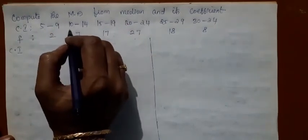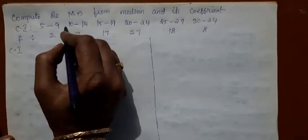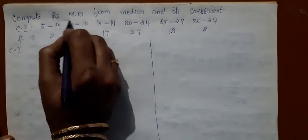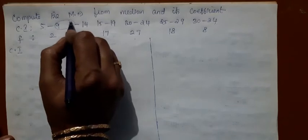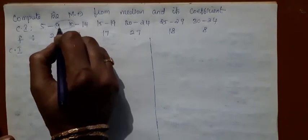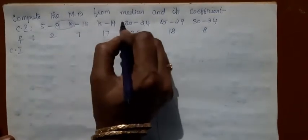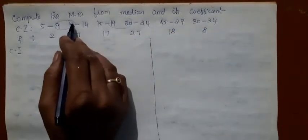So first you should convert the intervals into exclusive intervals. See the difference between these two numbers, the lower limit of any class and the upper limit of its preceding class. Or else even you can take here or you can take here. It is 1.